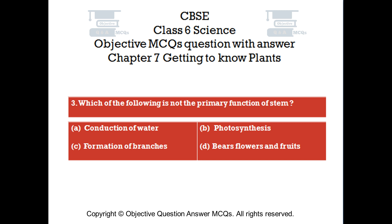Question number 3. Which of the following is not the primary function of stem? Option A: Conduction of water. Option B: Photosynthesis. Option C: Formation of branches. Option D: Bears flowers and fruits.